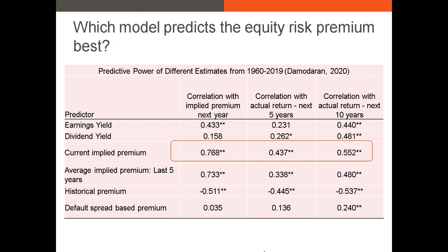While the correlation coefficient is significant at the 5% level, it's only a correlation coefficient of 0.55. Also notice from the table that the historical risk premium is actually negatively correlated with future returns, which indicates we probably shouldn't use this premium in our forecasts.